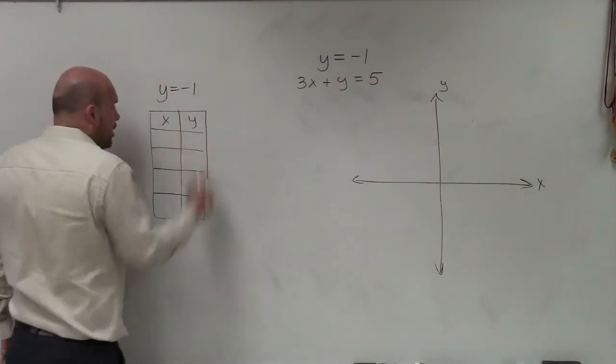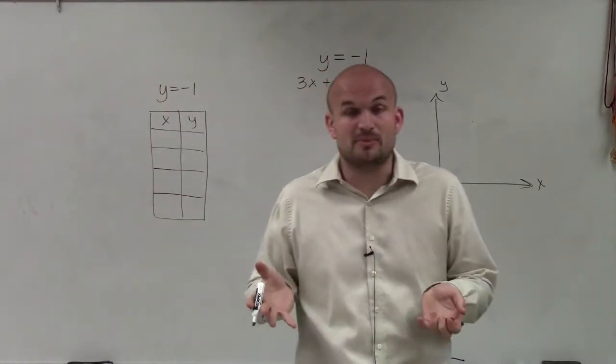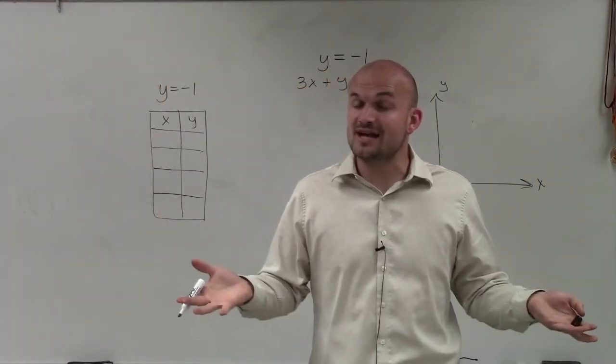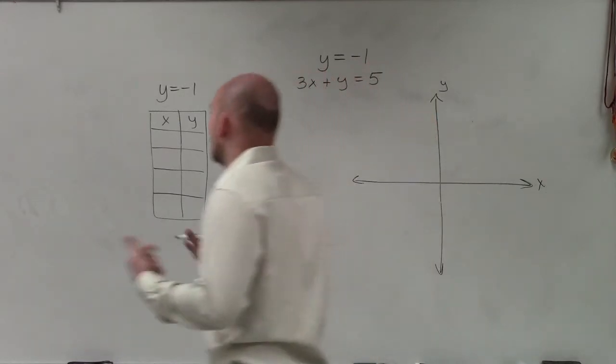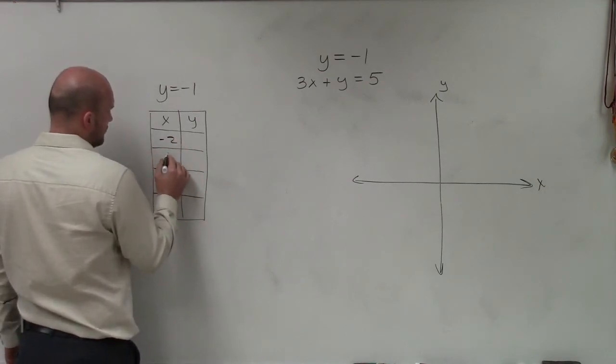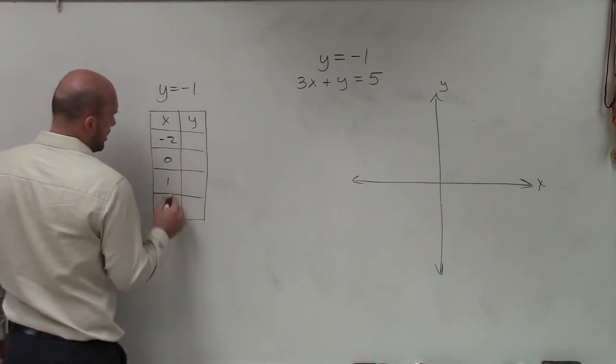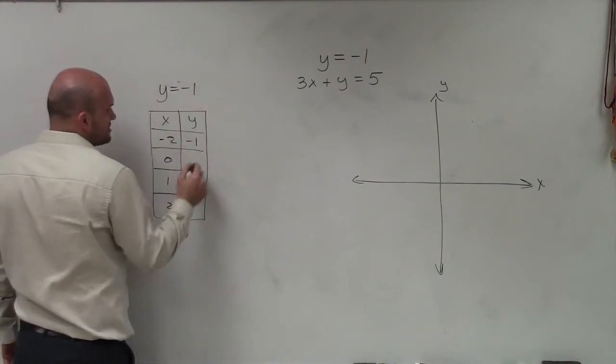We say y equals negative 1, so that means y is always going to equal negative 1. But when we're doing the table, a lot of times we pick our independent variable, which is our x variable, that we choose which values we want to evaluate our equation for. So I can just do like negative 2, 0, 1, and 2. Well, in this equation, y always equals negative 1.